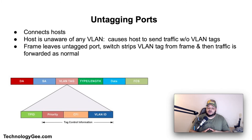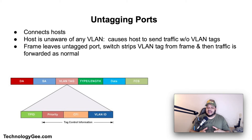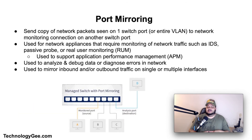An untagged port, or access port, on a switch connects to a host. The host is unaware of any VLAN configuration, which causes it to send its traffic without any VLAN tag on the frames. When the frames reach the switch port, the switch will add a VLAN tag — the switch port is configured with the VLAN ID that it will put into that tag. Most switch ports use this mode by default with VLAN ID 1. When a frame leaves an untagged port, the switch strips the VLAN tag from the frame and traffic is forwarded as normal.